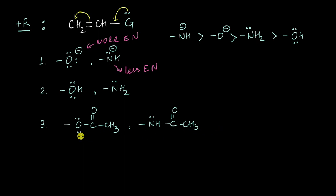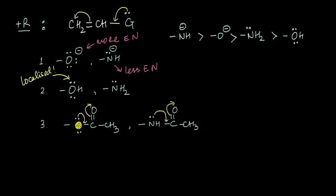Now let's look at the groups OCOCH₃ and NHCOCH₃. Even here we have oxygen and nitrogen atoms with lone pairs of electrons, but unlike the previous cases where the lone pair was localized over oxygen or nitrogen, in these cases the lone pairs can resonate with the C=O double bond. So these lone pairs are not localized but delocalized — they are not exclusively over the oxygen atom — which decreases the electron density and makes these lone pairs less available for donation.